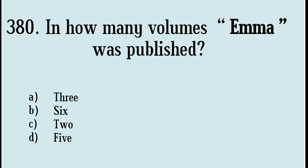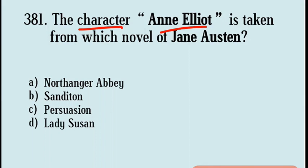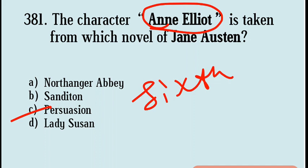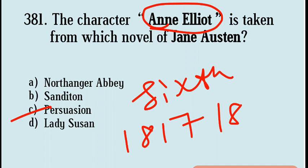Next question: The character Anne Elliot is taken from which novel of Jane Austen? Options are Northanger Abbey, Sanditon, Persuasion, Lady Susan. Correct answer: Option C, Persuasion. Anne Elliot is the protagonist of Jane Austen's 6th novel and last completed novel, Persuasion, written in 1817 and published 1818.